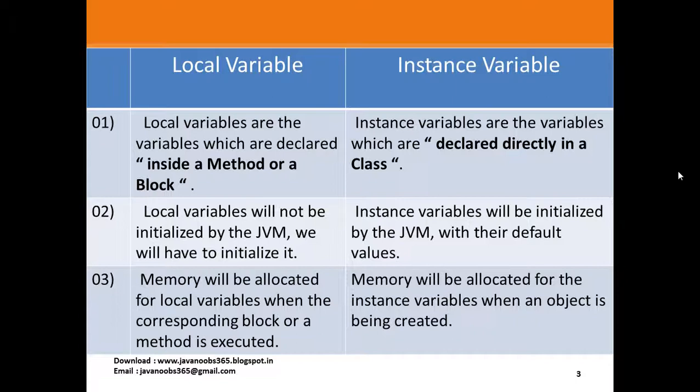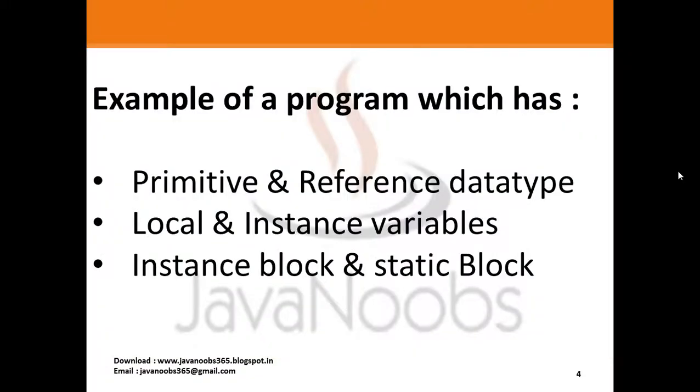Memory will be allocated for local variables when the corresponding block or method is executed. Memory will be allocated for instance variables when an object is being created — that is, at the time of the creation of the object.